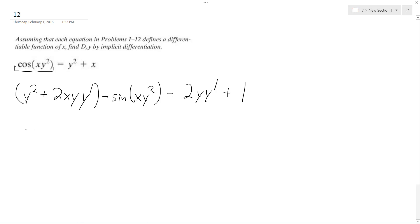So here, what we end up with is, just to make this easier, negative 2xy y prime, sine of xy squared, minus y squared, sine of xy squared, is equal to 2y y prime plus 1.